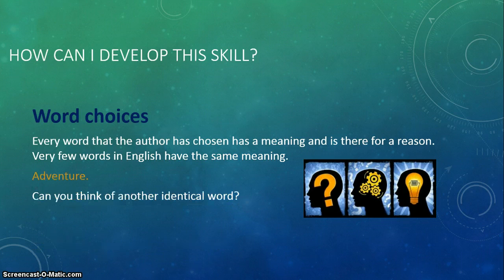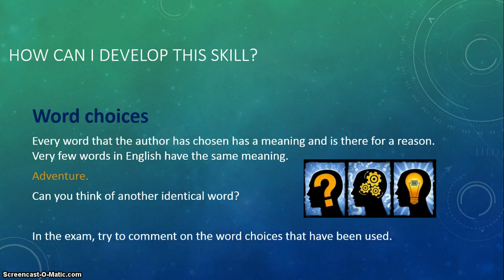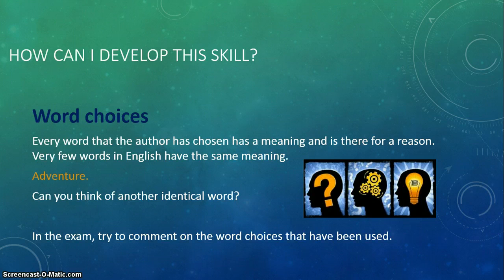Really, very few words in English have the exact same meaning. For example, take the word 'adventure' — is there another word that means the exact same thing? You can see how an author would have crafted their word choices to mean something. It really means something, and you have to look at it. Only by looking at the word choices can you actually understand the implicit, the implied meaning. In the exam, make sure that you comment on the word choices that have been used.